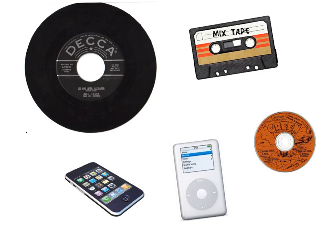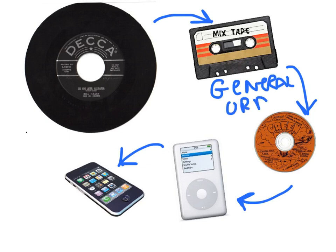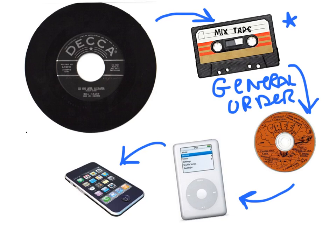The easiest way to explain relative dating is to look at an example of how people have listened to music over the last couple of generations. You start out with a record, then move to cassette tapes, then CDs, then a first-generation iPod, then a smartphone. All you know is that people were listening to cassette tapes in between records and CD players. It doesn't tell you the exact year the cassette tape came out or when people stopped listening to cassettes.